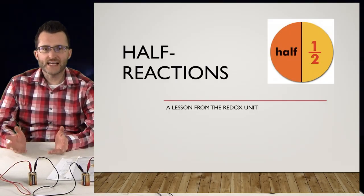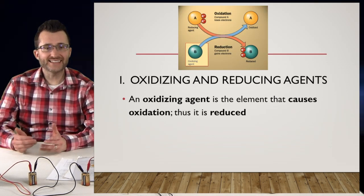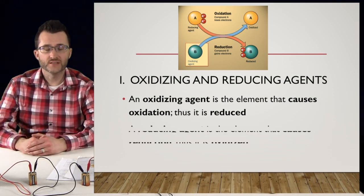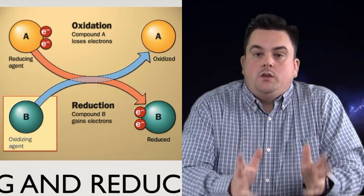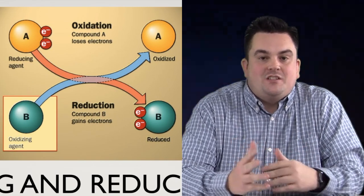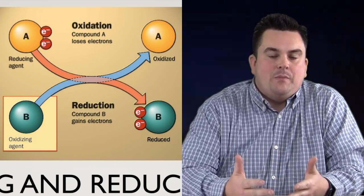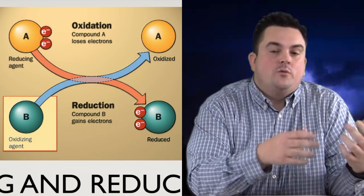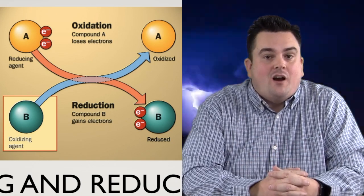Half-reactions — a lesson from the redox unit. An oxidizing agent is the element that causes oxidation, thus it is reduced. A reducing agent is the element that causes reduction, thus it is oxidized. When you see the word 'agent,' think of it as the opposite. The oxidizing agent is the one being reduced, and the reducing agent is the one being oxidized. It's always that way — there are no exceptions.